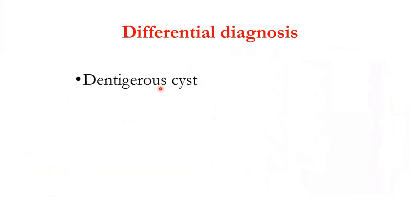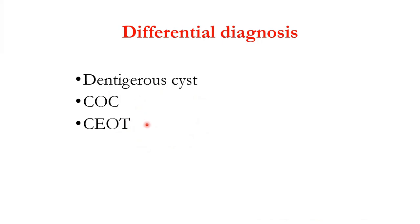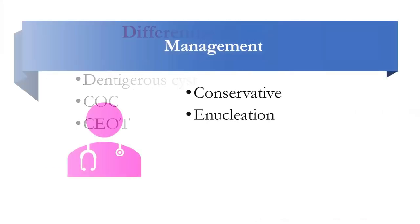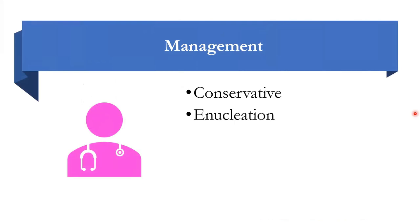For differential diagnosis, the first is the dentigerous cyst, which must be differentiated both clinically and radiographically due to the association with an impacted tooth. COC and COT are also differentials because they look radiographically similar with specks of radio-opacities within a radiolucency, but each has a distinct histopathological picture. Management is conservative — simple enucleation will suffice, with no recurrences.